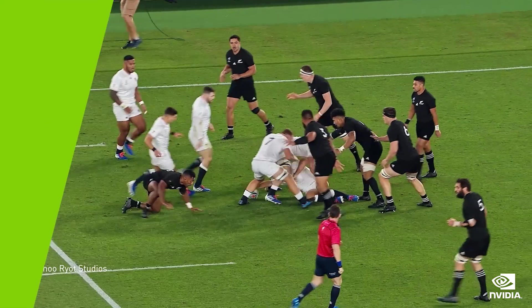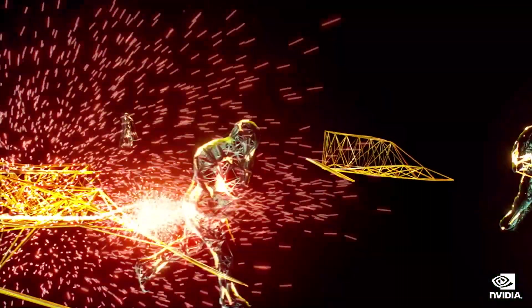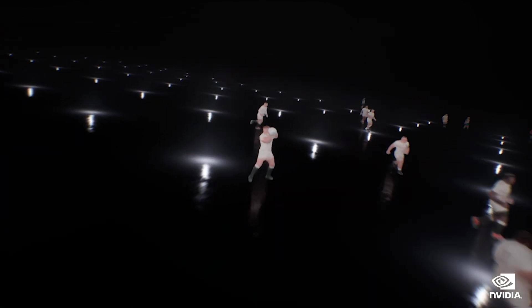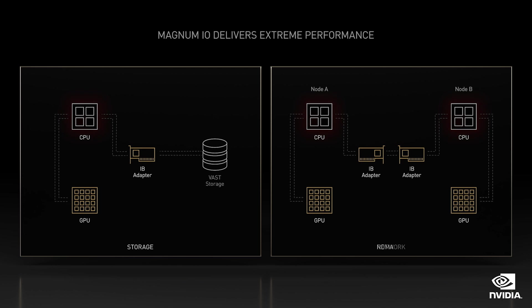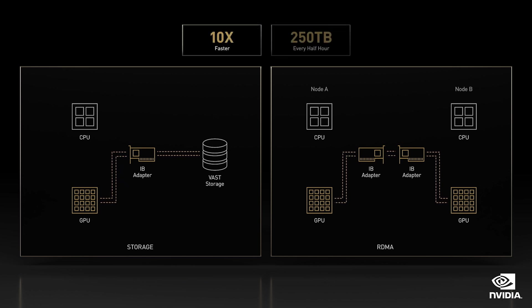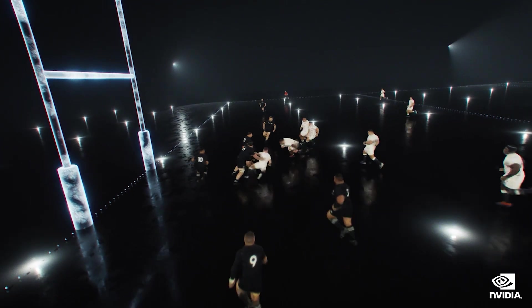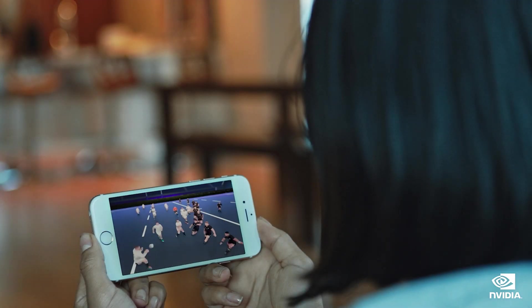Here is an example of work we're doing with Verizon. Volumetric video can offer exciting entertainment experiences. Yahoo Riot Studios places live-action rugby footage in a variety of settings. Traditional edge compute architectures cannot process 3D volumetric data from 50-plus high-resolution cameras in real time. Verizon adopted a breakthrough approach which bypasses the CPU by using Magnum I/O to write video streams 10 times faster and process up to 250 terabytes of video per half-hour. In the future, low-latency 5G, edge computing, and NVIDIA GPU acceleration will enable Verizon to open new options for putting you in the game.